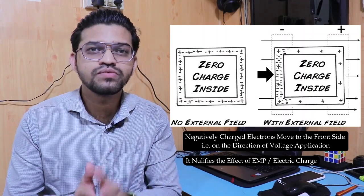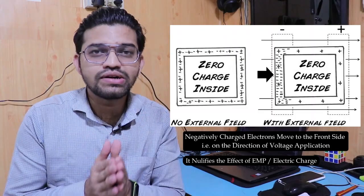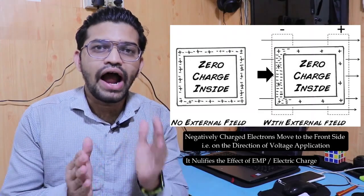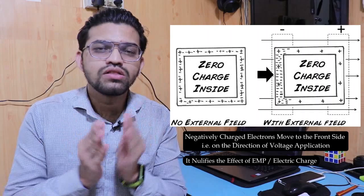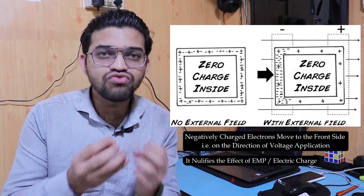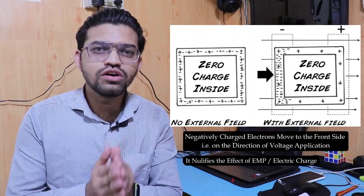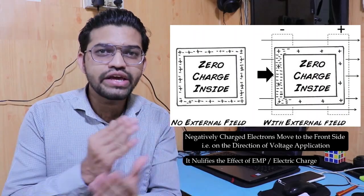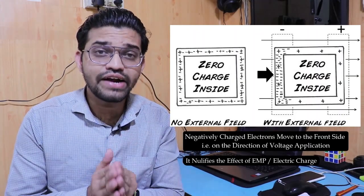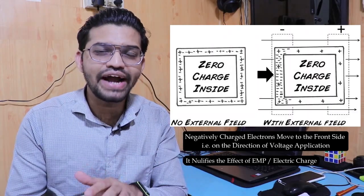This is the reason inside the lift, our cell phone signals get jammed. And this is the reason transformers are covered with Faraday cages. That was nothing but the basic principle behind the working of the Faraday cage. Now let's talk about the applications of the Faraday cage.